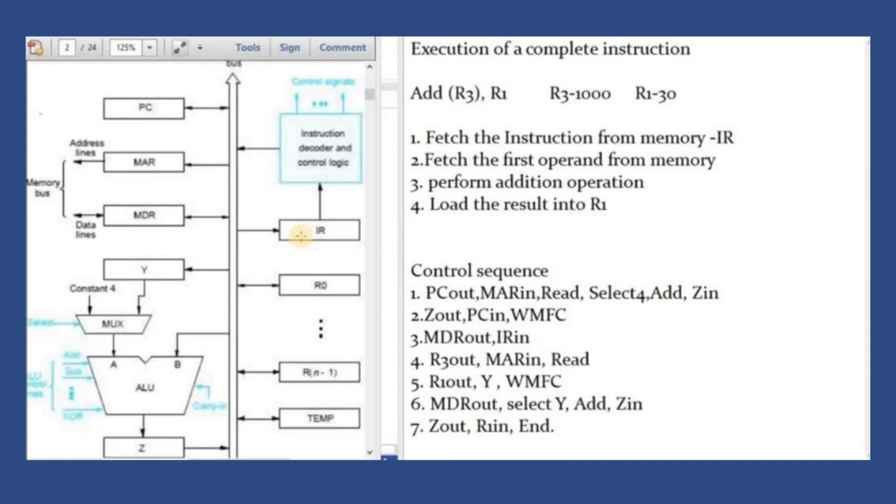The data fetched from memory which is now stored in the MDR register is taken out and put into point B of the ALU. The data from the Y register is also taken out and put into point A of the ALU. An addition operation happens in the ALU and the result is stored in the Z register.